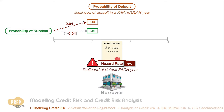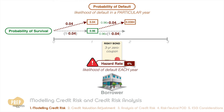The opposite metric is the probability of survival — for the first year it would be 96 percent. For the second year, given that the bond has not defaulted, we have conditional probabilities of default or no default. To calculate the unconditional probability we multiply by the previous year's probability of survival, giving a 3.84 percent probability of default and 92.16 percent probability of survival for the second year.